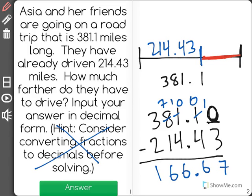A common mistake students make is they forget to bring the decimal point down and have it there. You need to have that for the correct answer of 166.67.